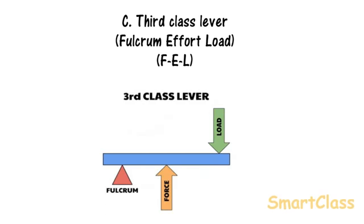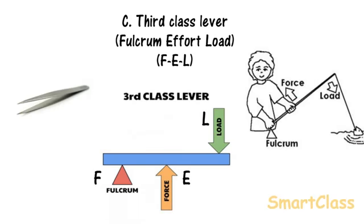The third type is third class levers. In this case, the fulcrum is at one end of the lever and load at the other end. The effort is applied between the fulcrum and the load. Fishing rod, tweezers and tongs are few examples of third class levers.